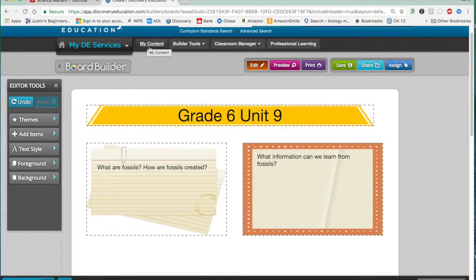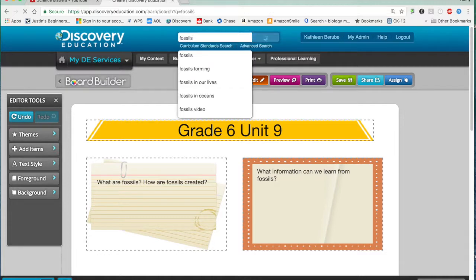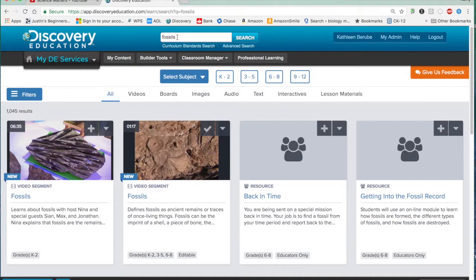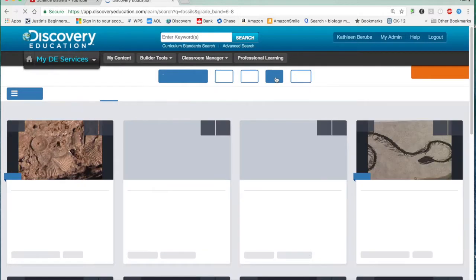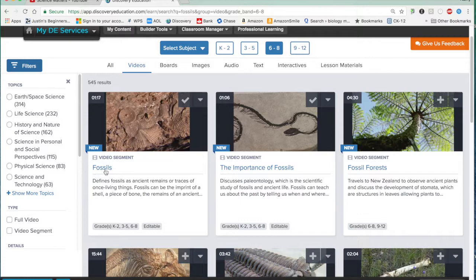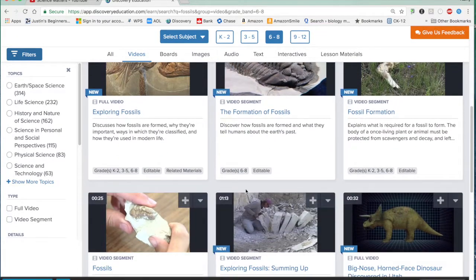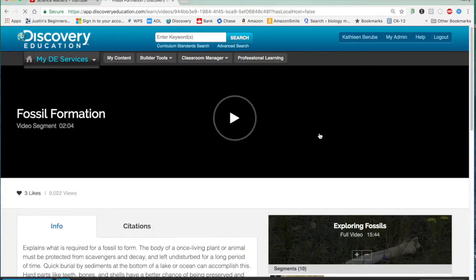So let's say I want to step out of the board for a little bit, and I want to look for some videos about fossils. I'm going to add these videos to my content. When I'm searching for the videos, again, you have the filters that will allow you to be a little bit more specific. I'm going to look for grades six to eight. I just want to find some videos, and now I'm going to look through these videos. I've got fossils, the importance of fossils, exploring fossils. Maybe I want this one, fossil formation. So let's take a look at this, for example.